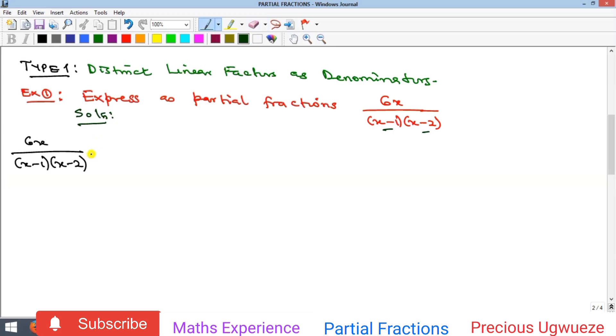To split this into its partial fractions, whenever you have linear factors, you're going to have A over one of the linear factors, which in this case is x minus 1, plus B over the other linear factor x minus 2.